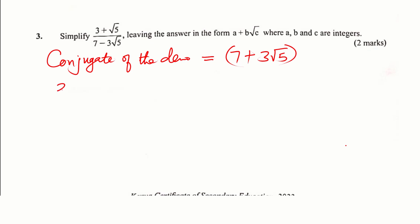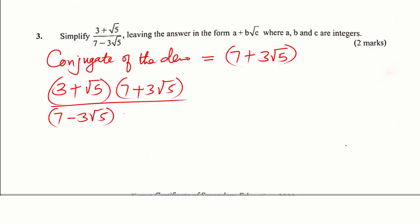So the numerator, 3 plus root 5, you multiply by that conjugate, 7 plus 3 root 5. Then again, you go to the denominator, 7 minus 3 root 5, multiply by 7 plus 3 root 5.